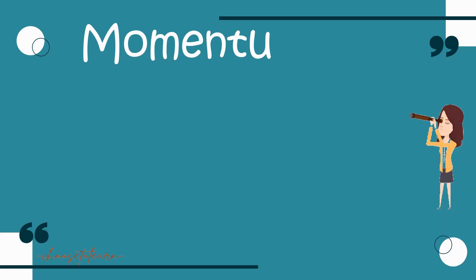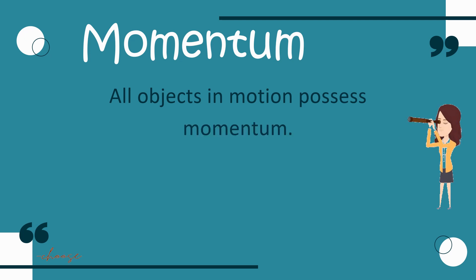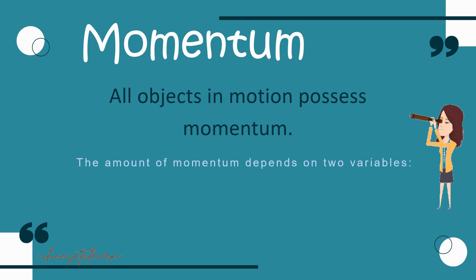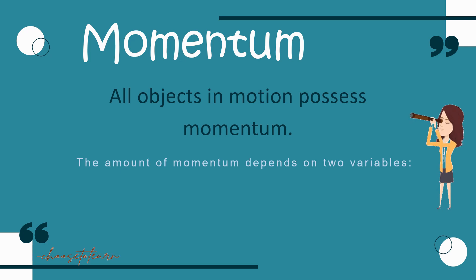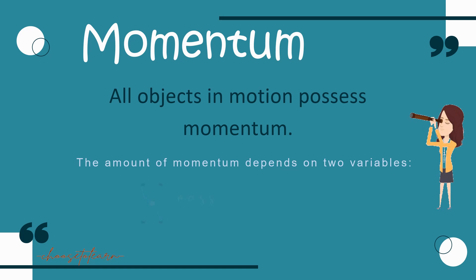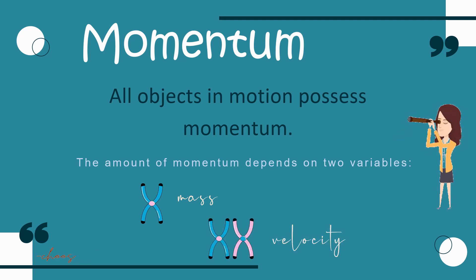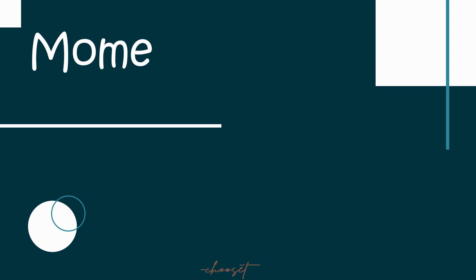Remember this: all objects in motion possess momentum, and the amount of momentum depends on two variables. The first one is how much the object is moving, which refers to the mass. The second is how fast the object is moving, which refers to the velocity of the object.